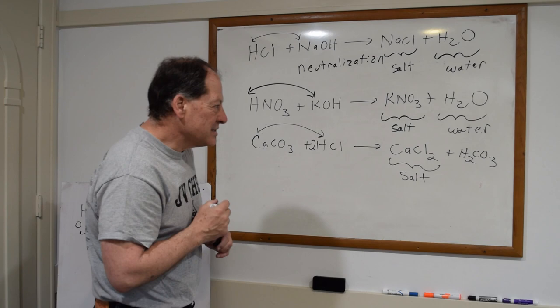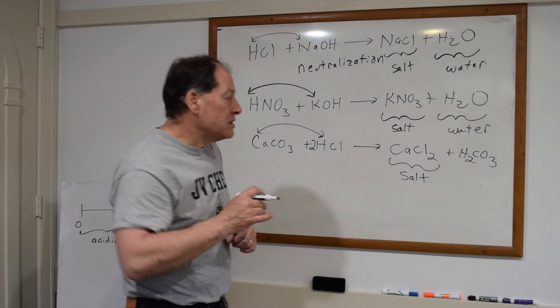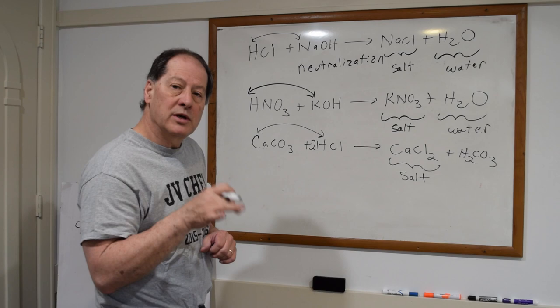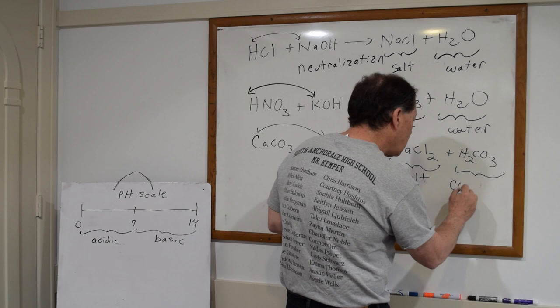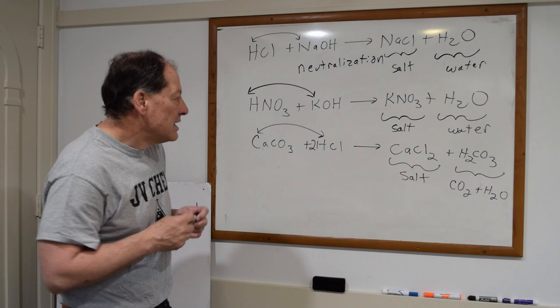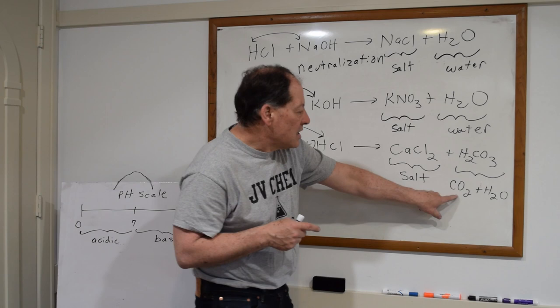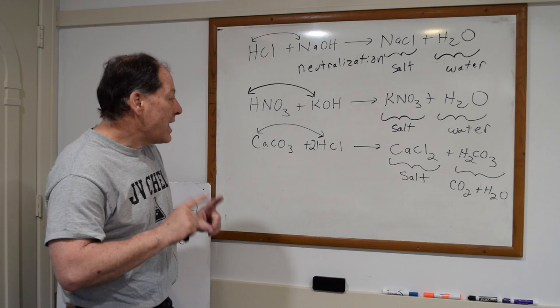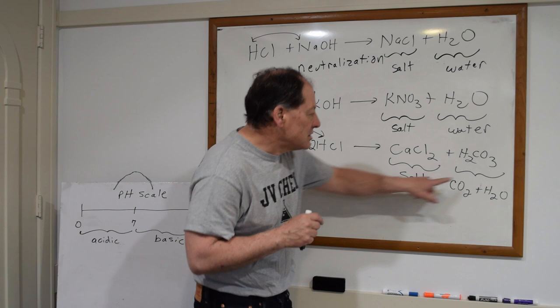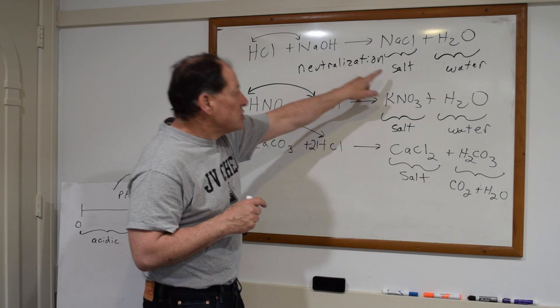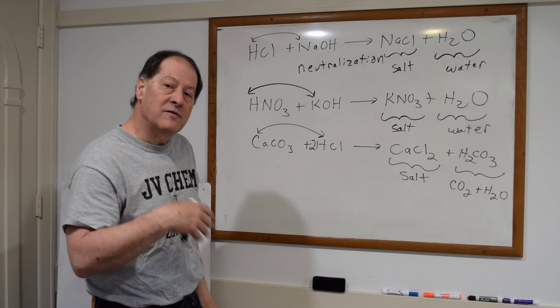This H₂CO₃ is also called carbonic acid — it's what happens when carbon dioxide is put in water, which you're familiar with in soda pop. So when I neutralize a carbonate with an acid, I make a salt, I also make water, but I also form carbon dioxide. That's what happens when a carbonate base reacts with an acid: salt, water, and carbon dioxide. If it's a hydroxide base, I make a salt and water — no carbon dioxide. Replay the video if you have any confusion. We'll see you next time.